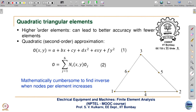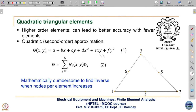For quadratic triangular elements, the corresponding approximation uses 6 nodes. The 3 corner nodes are 1, 2, 3, and nodes 4, 5, 6 are at the centres of the 3 sides. With 6 nodes there should be 6 unknowns a through f, and a corresponding approximation: a + bx + cy + dx² + exy + fy². This is a logical approximation with 6 constants.